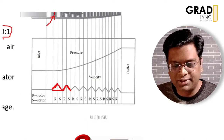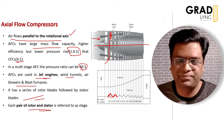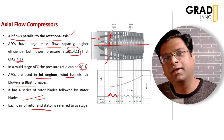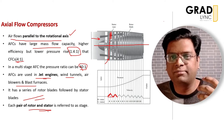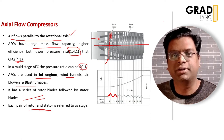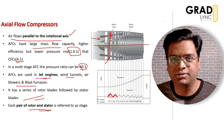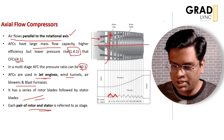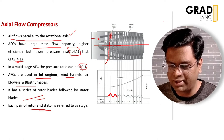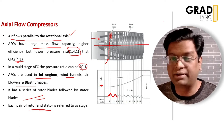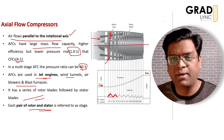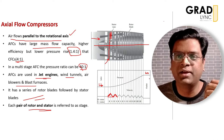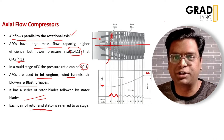Each pair of rotor and stator is called a stage. Multi-staging means pairs of rotor and stator are arranged one after the other. There may be 20 or 25 stages in today's turbofan and turbojet engines. For example, assuming an inlet pressure of 1 bar, you can achieve pressure ratios of up to 40 at the exit.